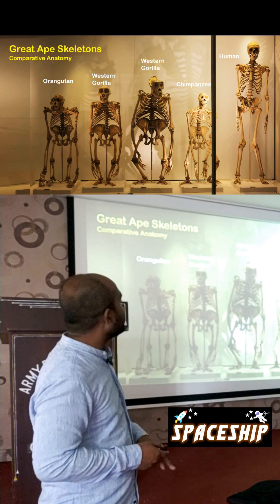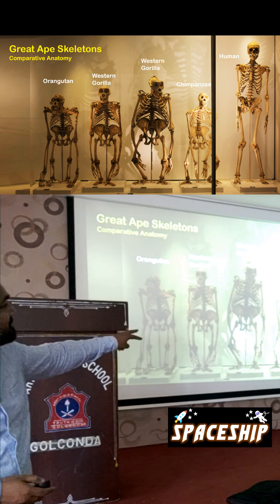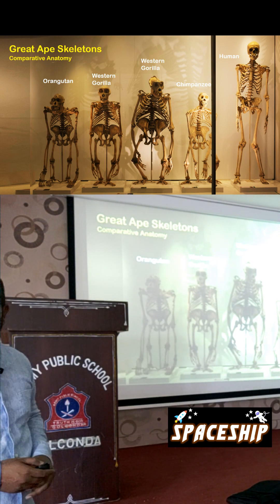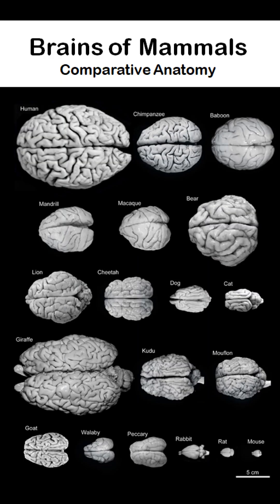You can look at the anatomical similarities of orangutan, western gorilla, chimpanzee, and human — almost the same. And look at the brains of different mammals: human is the largest, then chimpanzee, baboon, mandarin, macaque, bear — until it goes to the mouse, it's almost the same.